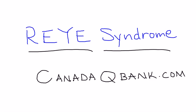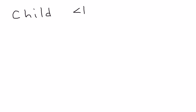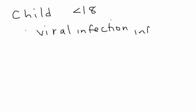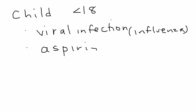The best way to explain this is a chronology of events. You have a child, of course under the age of 18, and this child develops influenza, which is a common viral infection. The child is then given aspirin to treat, usually, the fever.